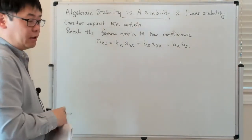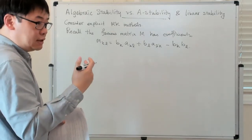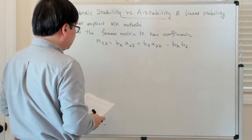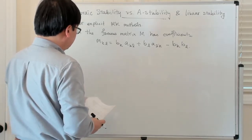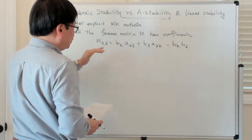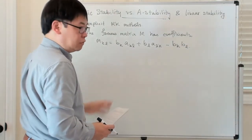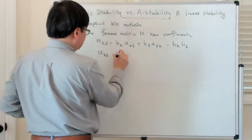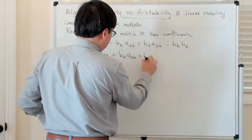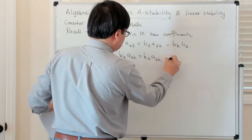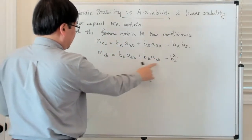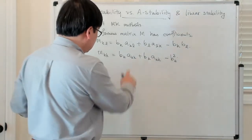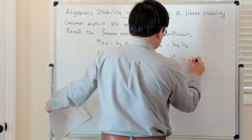With an explicit Runge-Kutta method, the A matrix is strictly lower triangular. So let's see what happens along the diagonal. M_KK equals B_K A_KK + B_K A_KK minus B_K squared. But A_KK is zero because the matrix A is strictly lower triangular — the diagonal vanishes. So these two entries vanish and you're just left with minus B_K squared.